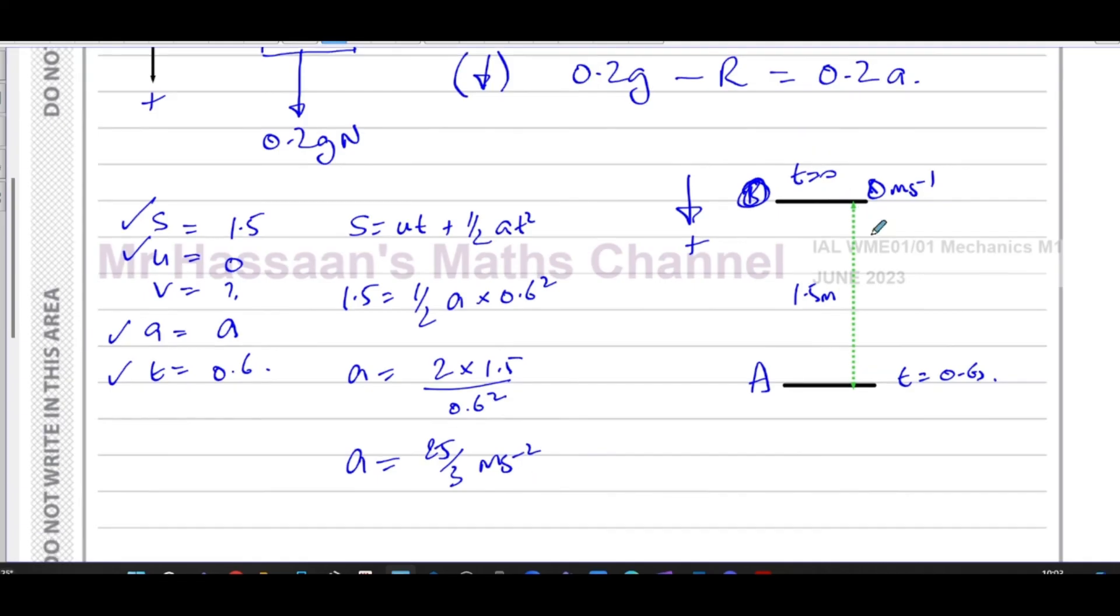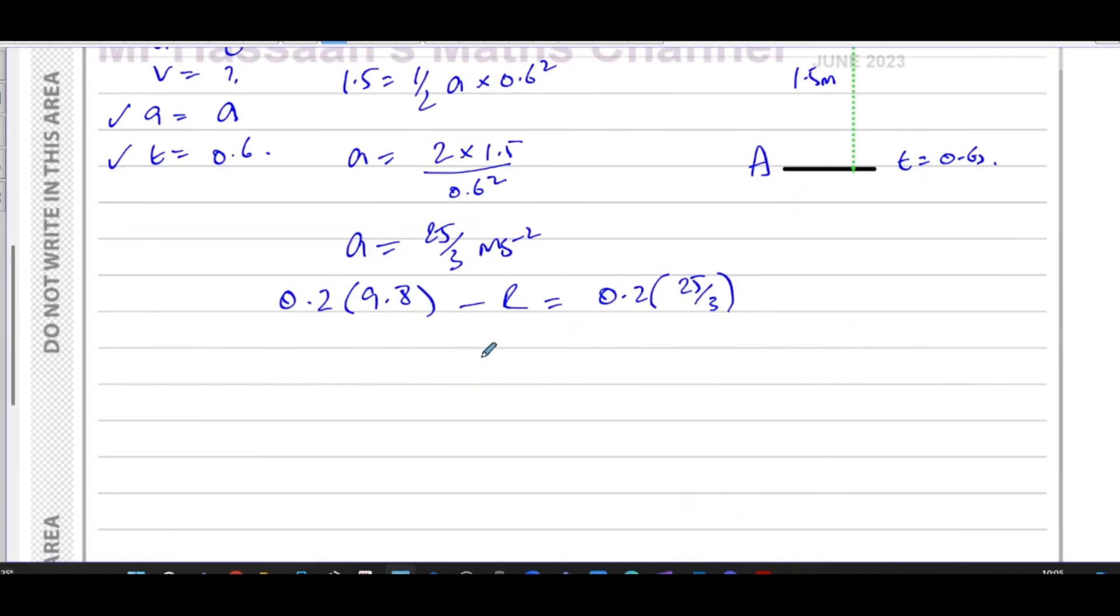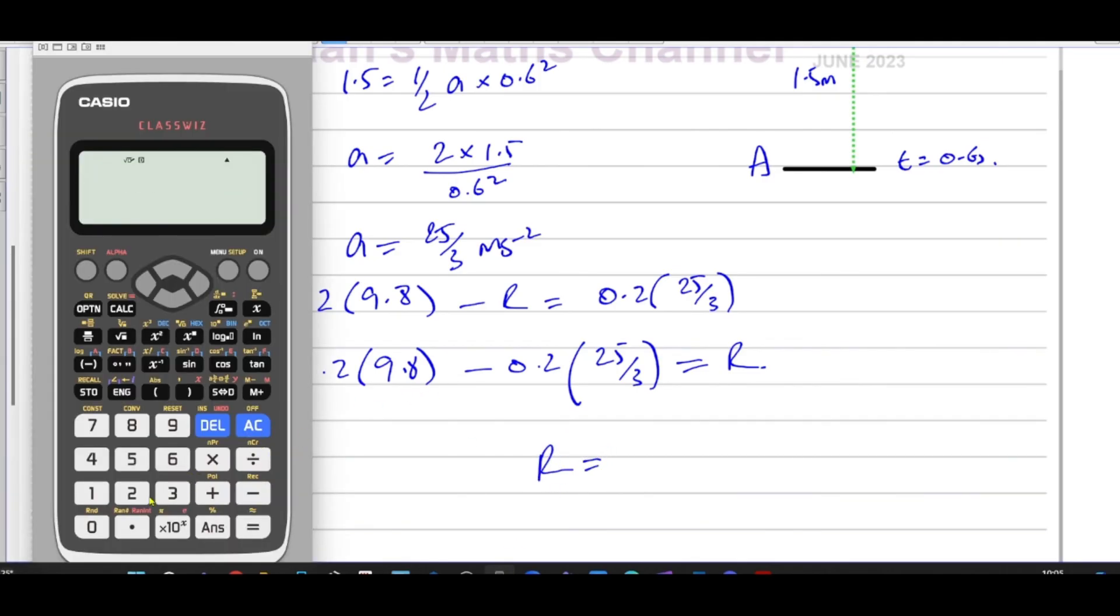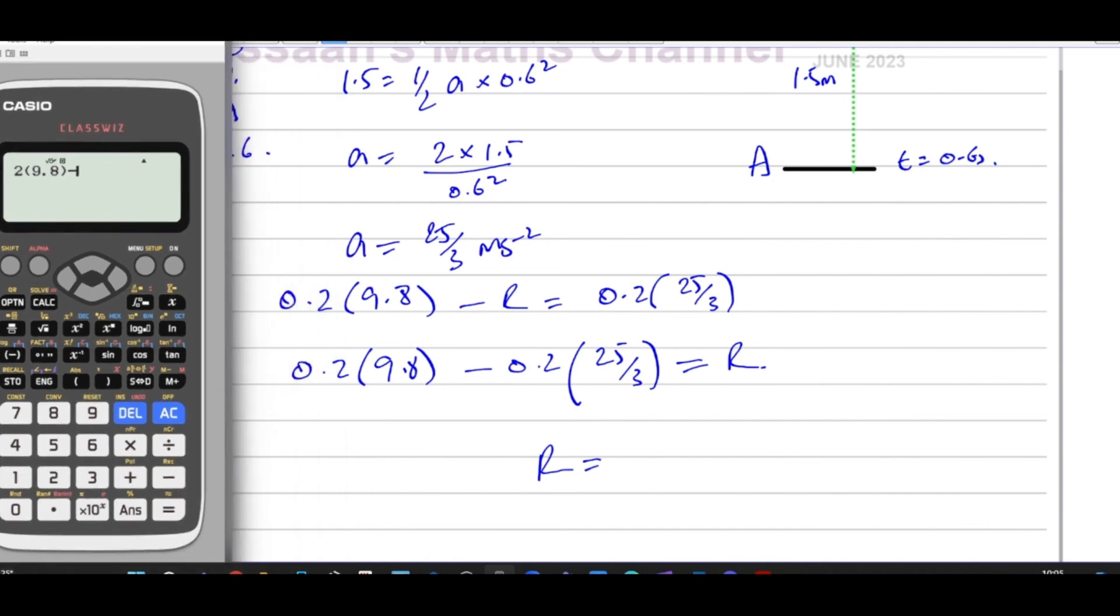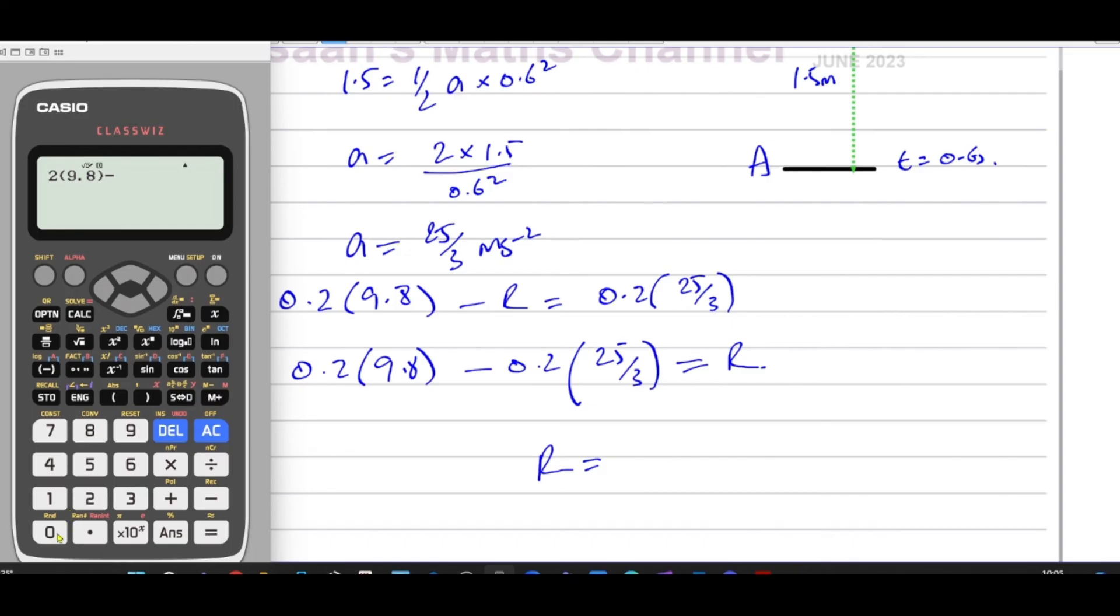So now we can put it in here to find what R is. So I can say that 0.2 times 9.8 minus R is equal to 0.2 times 25 over three. So I'm going to have 0.2 times 9.8 minus 0.2 times 25 over three equals R.